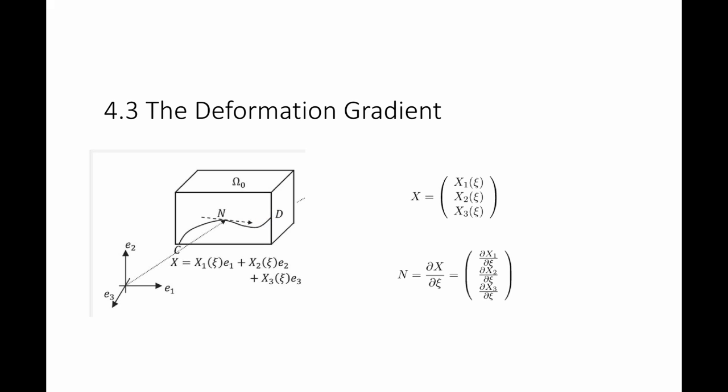The tangent to this line at any point is equal to the gradient of each component with respect to Xe. In order to find the tangent at this point, all I need to do is calculate partial X1 by partial Xc, partial X2 by partial Xc, and partial X3 by partial Xc, which gives me that tangent vector at this point.